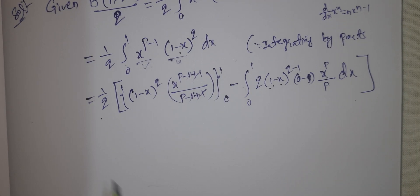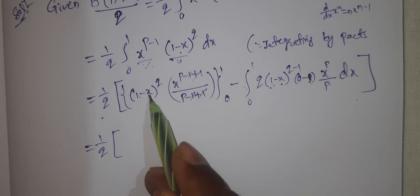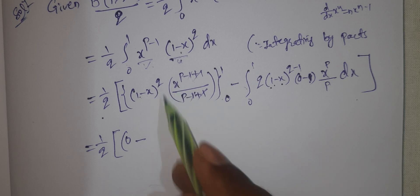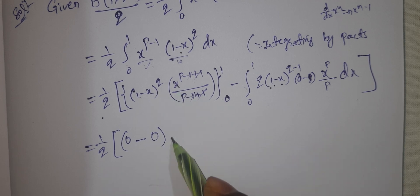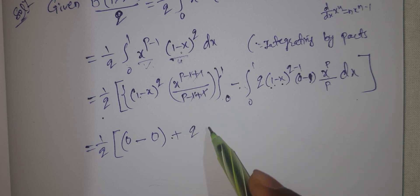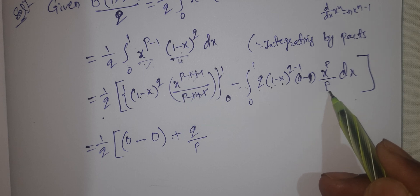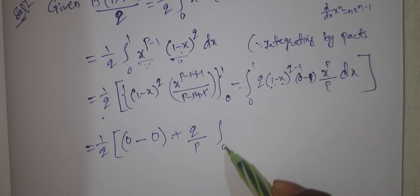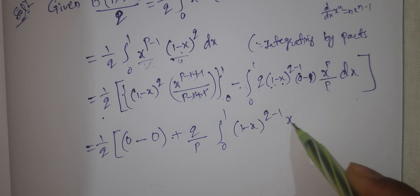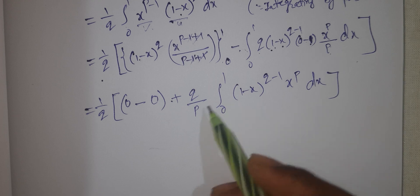Now apply the upper limit. At the upper limit, x equals 1, so 1 minus 1 equals 0 — that term is 0. Minus the lower limit: here x is 0, so that is also 0. Minus into minus gives plus. So q over p times the integral from 0 to 1 of 1 minus x to the power of q minus 1 times x to the power of p dx.